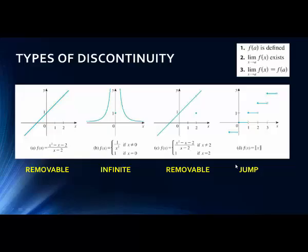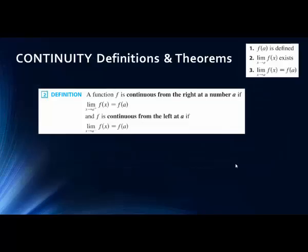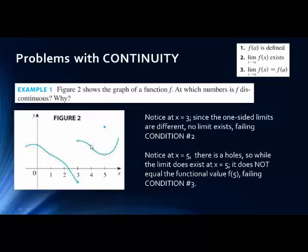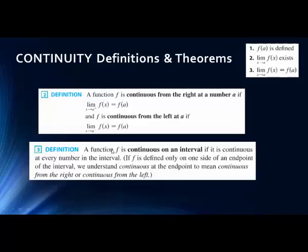We have a lot of definitions and theorems. We can also look at partial continuity — a function can be continuous from the right or continuous from the left. For example, here at x equals 3, it is discontinuous from the right but continuous from the left. However, since these one-sided limits give different values, you wouldn't have full continuity.